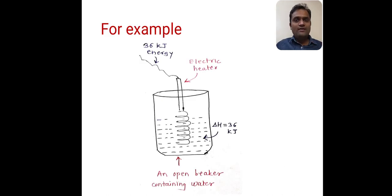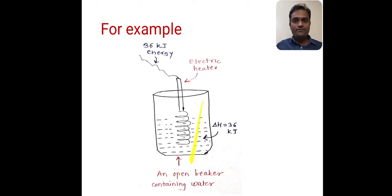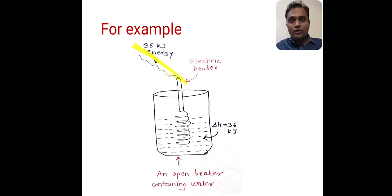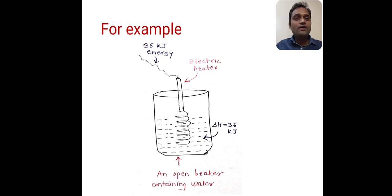This example is only for the purpose of understanding. Suppose we have an open beaker containing water. When we take an open beaker containing water, the pressure is constant. Suppose an electric heater is immersed in that beaker, and we supply 36 kJ of energy through this electric heater to the water. Then according to our statement, the change in enthalpy of water is 36 kJ.